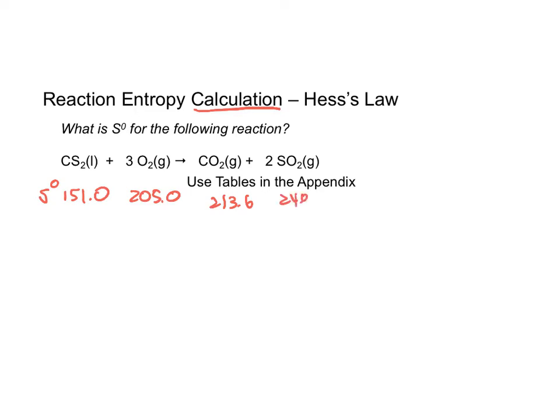And for sulfur dioxide, it is 248.5. All of these values are in joules per mole Kelvin. I'll talk about the units a little bit later in the chapter.